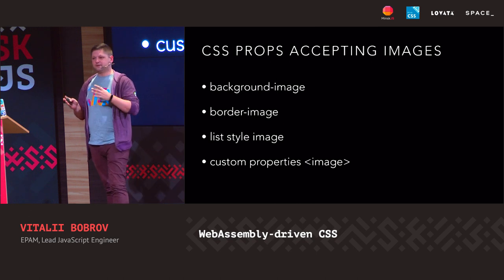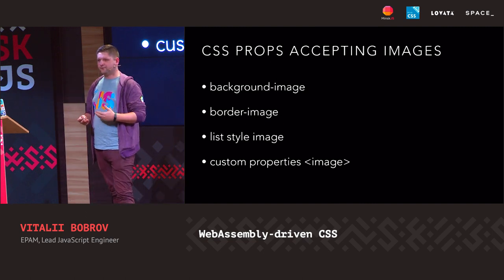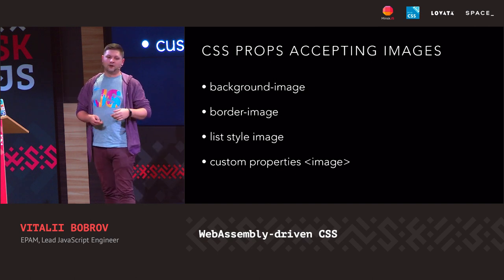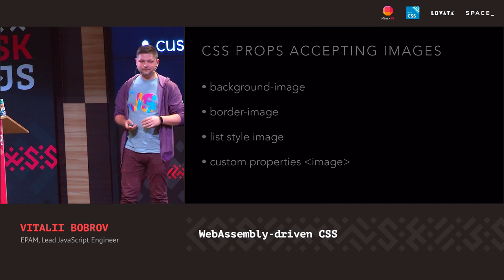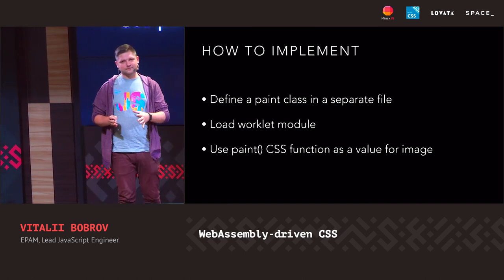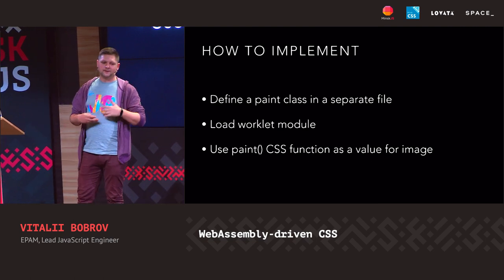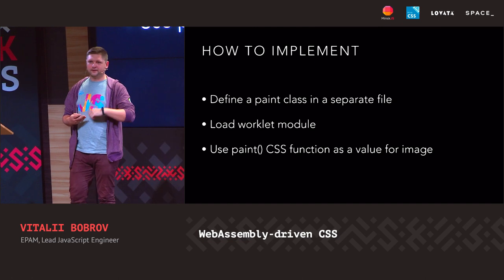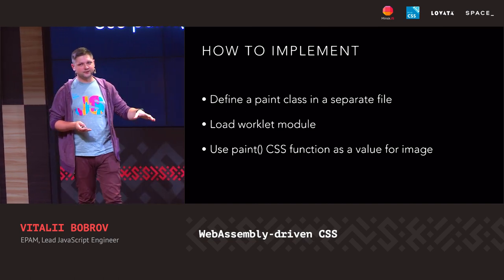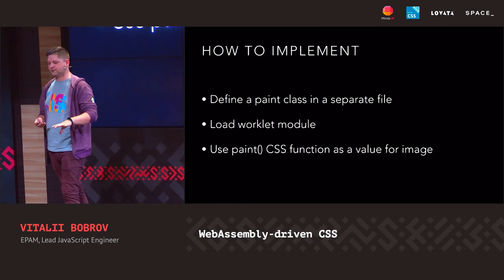So what is a Paint API Worklet? It's an API that allows you to draw a canvas image for every property that accepts images, like background-image, border-image, list-style-image, or a custom property of type image. How can we create one? First, we need to create a class in a separate file to define our special Paint class that should follow the interface. Then in the main thread, we load this module so we'll be allowed to use it. After that, in CSS we can use the Paint function for background-image, for example, and pass the name of our worklet.